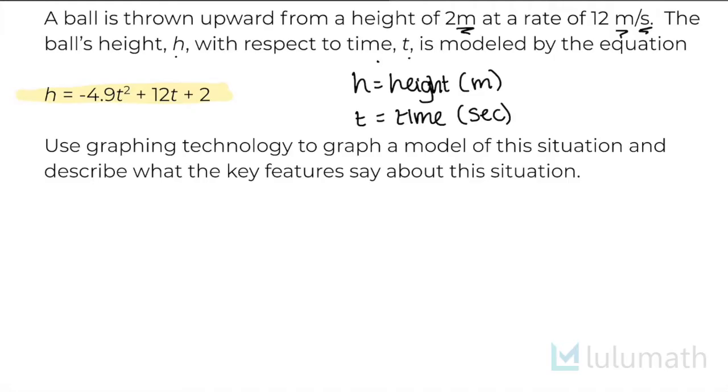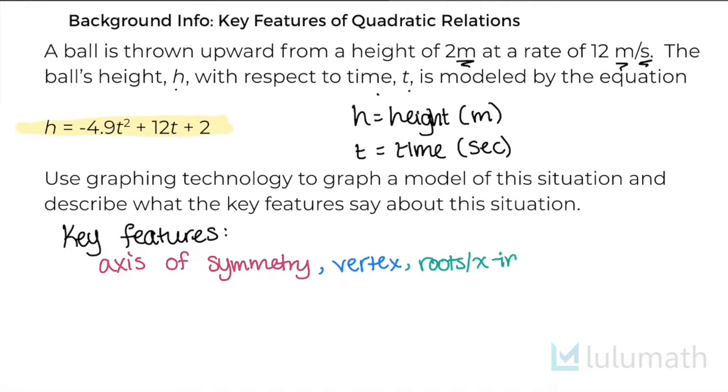So the instructions tell us to use graphing technology to graph a model of the situation and describe what the key features say about this situation. So before we do our graphing technology, I just want to make a list of all of our key features. So if you remember, our key features include the axis of symmetry, the vertex, and remember the vertex and the axis of symmetry go hand in hand. The roots or the x-intercepts, and if you watch the video on key features we talk a little bit about the slight difference between roots and x-intercepts.